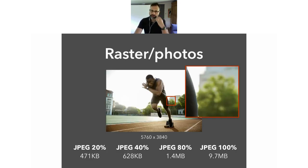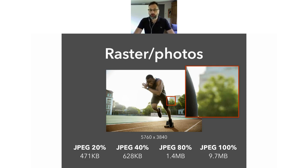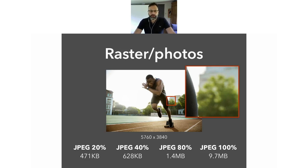Moving on to raster photos — rasterized photos mean we're looking at pixels and colors. I've got an example of a large image from a photo library: a guy running along a track, with a pixel size of 5,760 by 3,840. That's probably too big for the web, but we do want to work with the largest image possible. Any image work — compression, resizing, color adjustment — we really want to start with the biggest possible image.